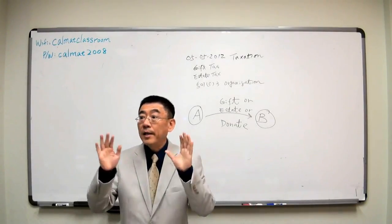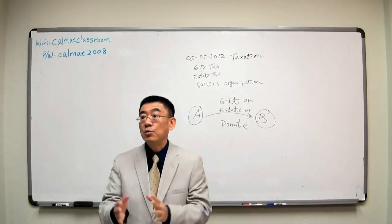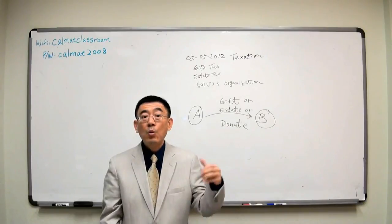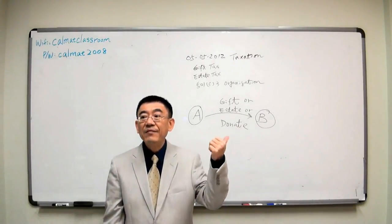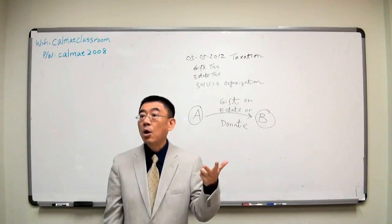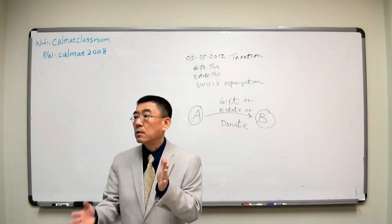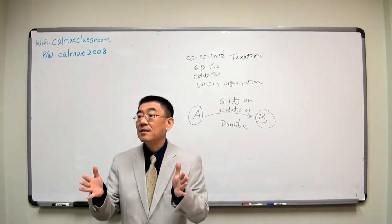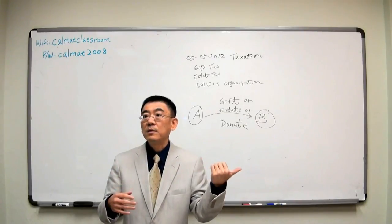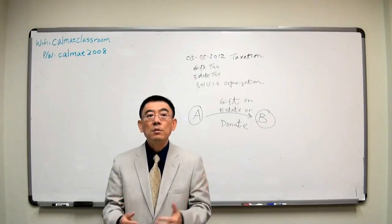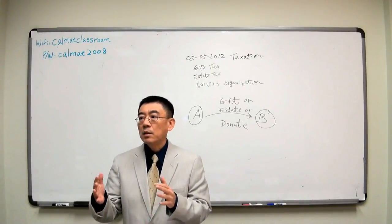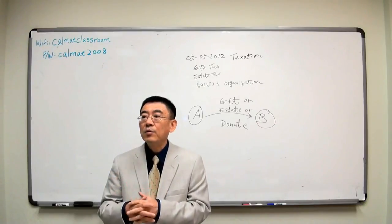But here for this final chapter, the assets from A to B, but B does not pay anything back to A. So there is no capital gain issue for A. So this is why when we talk about either the gift or estate or donation, it always means the party receiving the asset does not pay anything back together, so there is no capital gain issue for A.